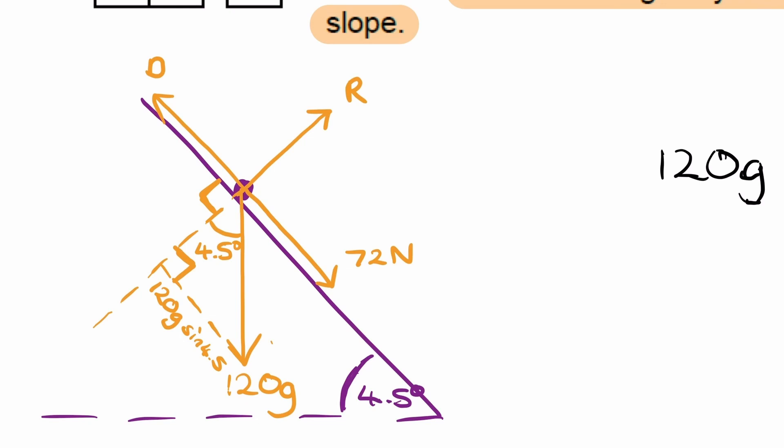If it's in equilibrium, then the forces along any particular direction should sum to zero. So parallel to the slope, all of the forces parallel to the slope, which is the same direction as the driving force, should all sum to zero.